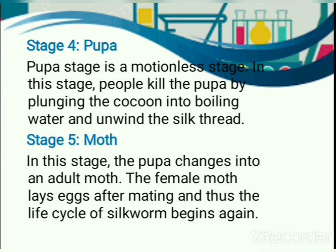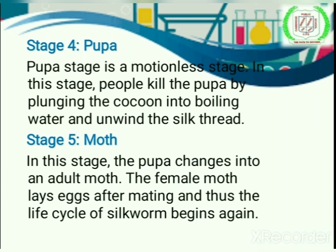Stage 4 is pupae — the pupae stage is a motionless stage. In this stage, people kill the pupae by plunging the cocoon into boiling water and unwind the silk thread. The last stage is moth — in this stage the pupae changes into an adult moth. The female moth lays eggs after mating and thus the life cycle of silkworm begins again.